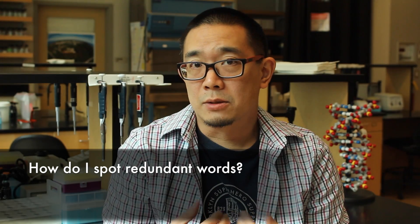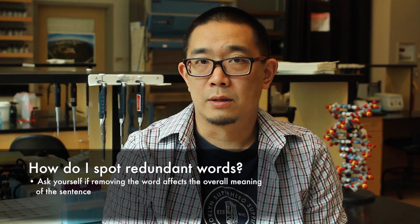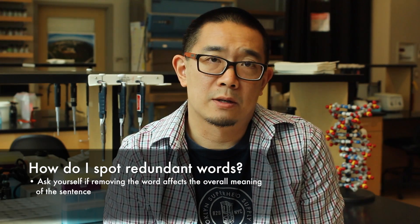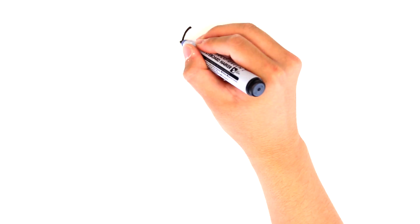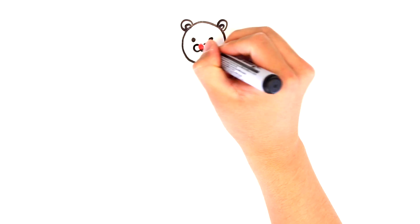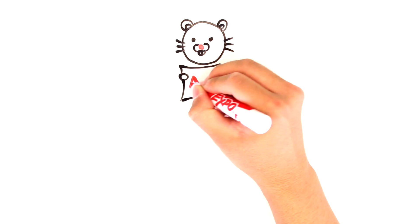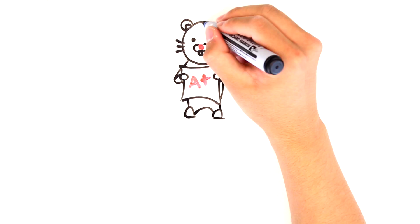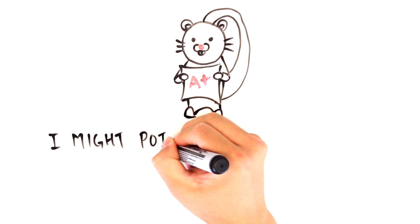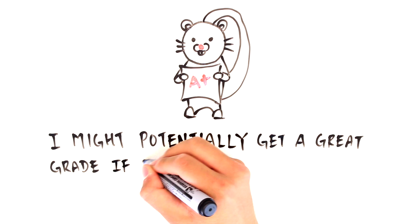So, in essence, this is just kind of reading through the sentence and just seeing if the sentence would actually stay the same even if you take certain words out. So, a couple good examples are phrases like entirely unique or might potentially. If you think about a phrase like entirely unique, there's redundancy there because something is either unique or isn't.